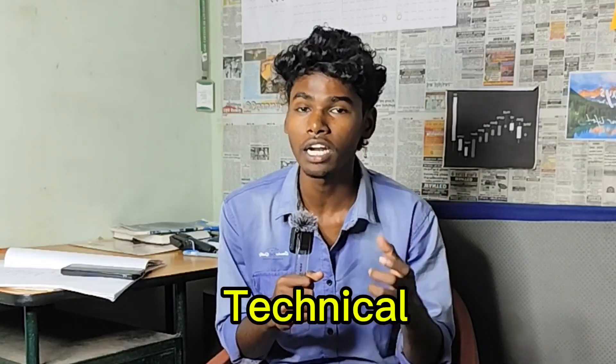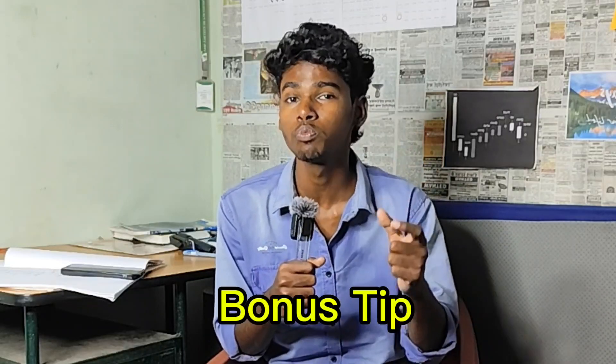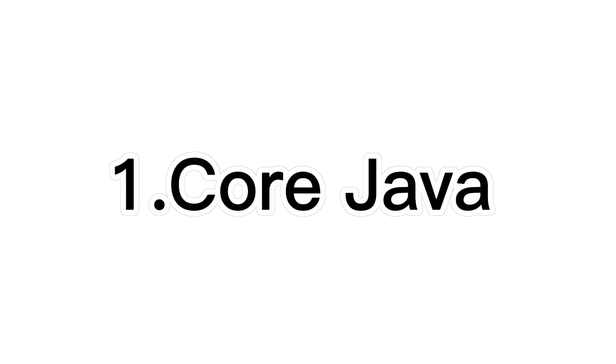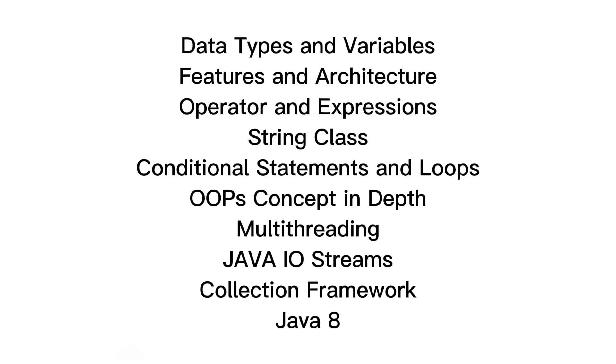Number 1 — Core Java. Topics include: data types and variables, features and architecture, operations and expressions, String class, conditional statements and loops, OOPs concepts in depth, multithreading, Java I/O streams, collection framework, and Java generics.